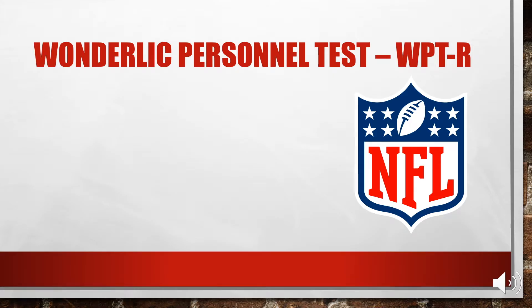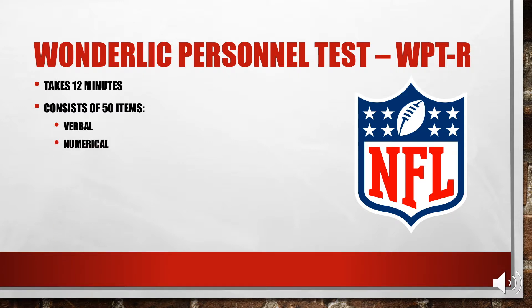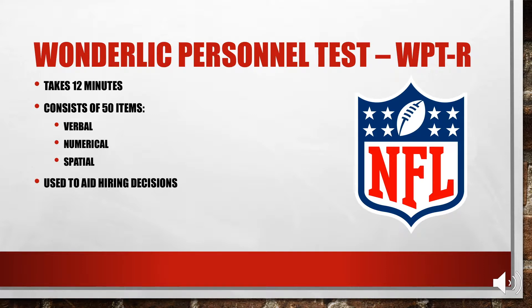Starting with our group tests, first we have the Wonderlic. The Wonderlic is a 12-minute test consisting of 50 items including verbal, numerical, and spatial items. It's used to aid hiring decisions. Fun fact that might help you remember this test: the WPT is used in the NFL, and you can remember that the Wonderlic is used to assess wonderful NFL athletes. It makes sense because NFL players are busy — they don't have all day to sit around taking tests, so they use this 12-minute measure.